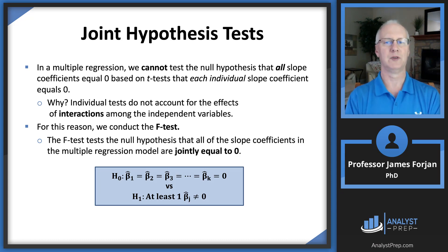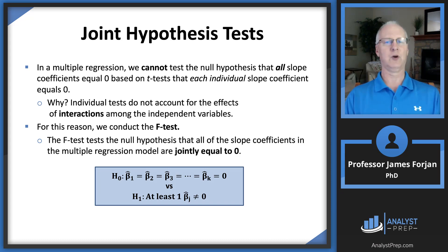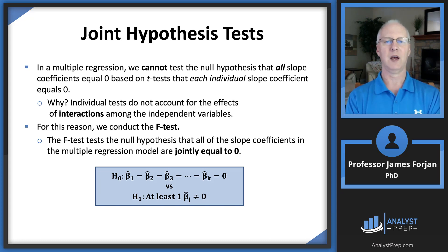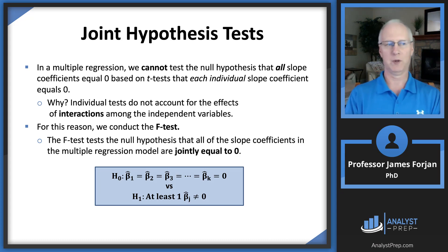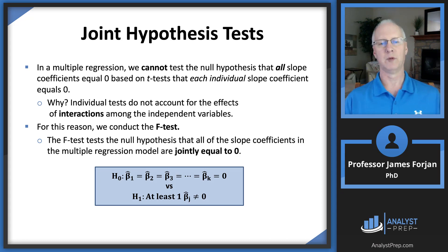Now, the joint hypothesis test: we cannot test whether all slope coefficients equal zero using individual t-tests for each slope coefficient. It's tempting to throw all the t-tests into a bucket, but individual tests ignore the interactions among the independent variables. We assume they're independent of each other, but that's not always true. In our GDP example, inflation is a component of certain interest rates, so they have some relationship. To solve this problem, we use an F-test.